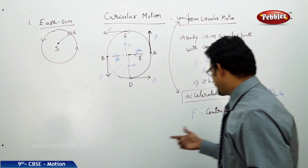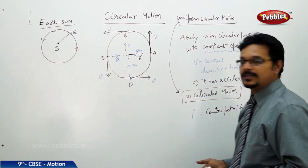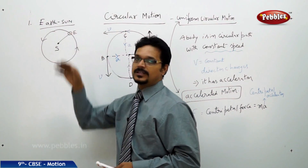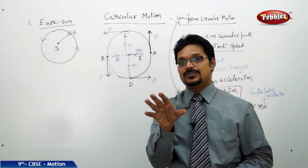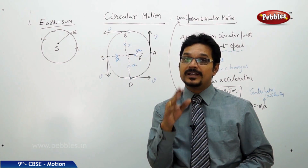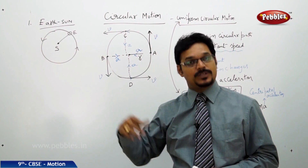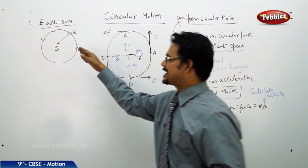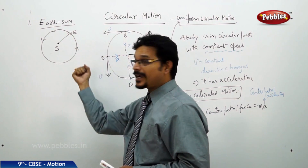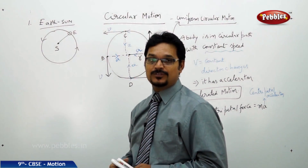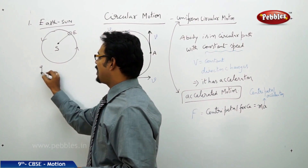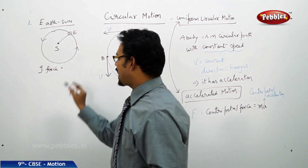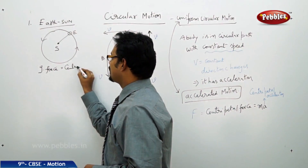The centripetal force is acting on the Earth, making it rotate around the sun. But centripetal force is not actually a real force — some force is acting like a centripetal force. In this case, the sun is attracting the Earth and that attractive force is called gravitational force. So here, gravitational force is acting like centripetal force.